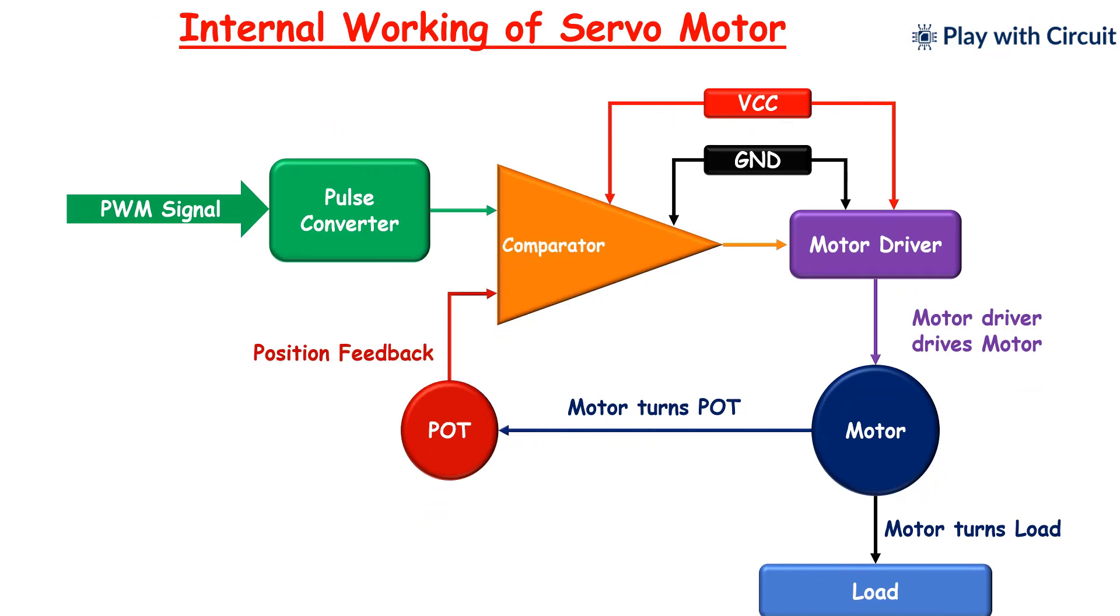The feedback sensor, such as a potentiometer or an encoder, provides feedback on the motor's current position to the control system, which compares the current position to the desired position. The control system adjusts the motor's position accordingly to ensure that the motor accurately reaches the desired position.